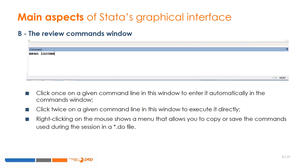The review commands window displays the last few lines typed and executed in the commands window. You can click once on a given command line appearing there to enter that command in the commands window, or click twice on it to directly execute that command. It can also be useful to right-click in the commands window to copy one or more commands and paste them in your do file.